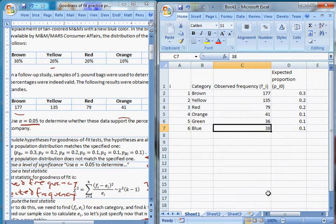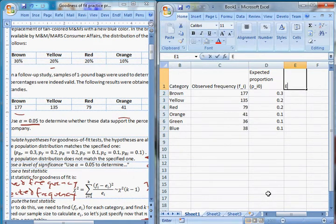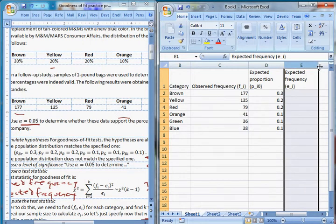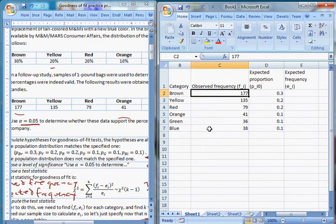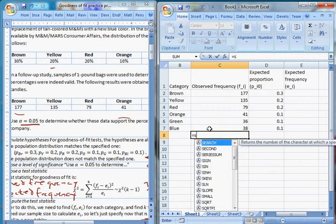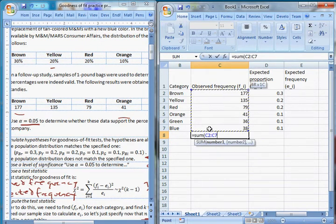Now, that's our expected proportion. Our expected frequency, which is e sub i, the way we find that is we take our expected proportion and we multiply it by the total number that there are. So we can take the sum here to find out how many there were. The question told us, but it's going to be 506 to make sure we copied that correctly.